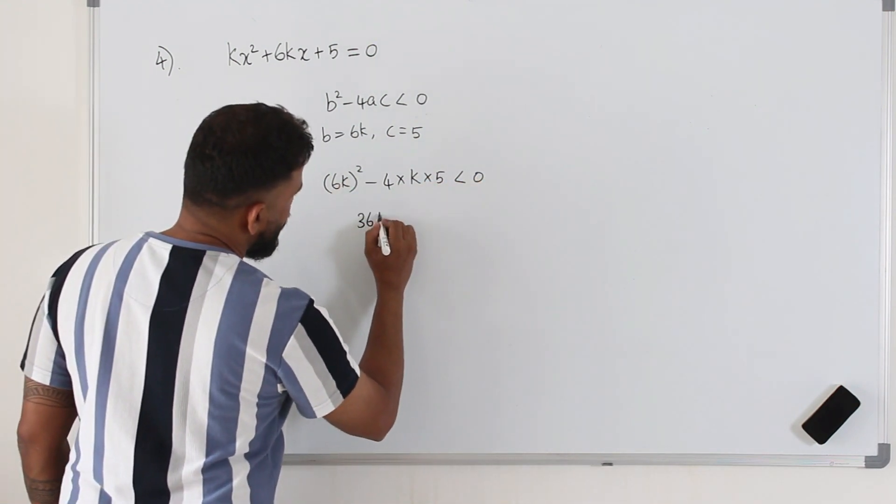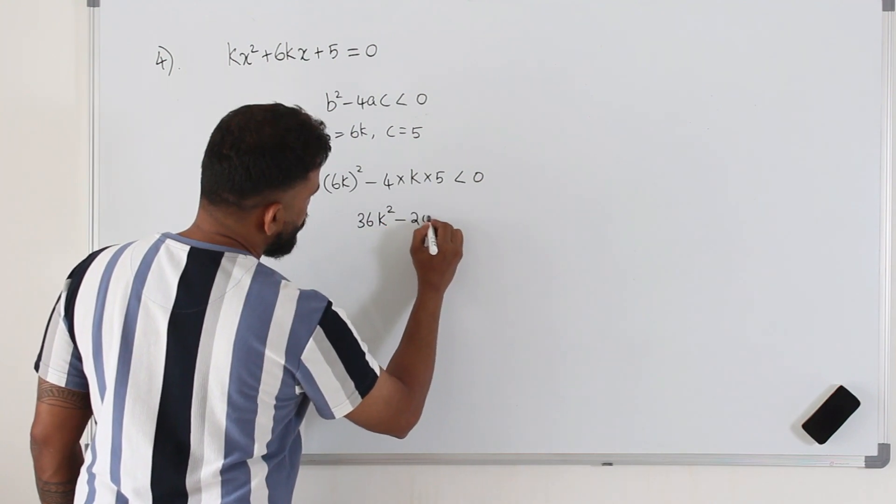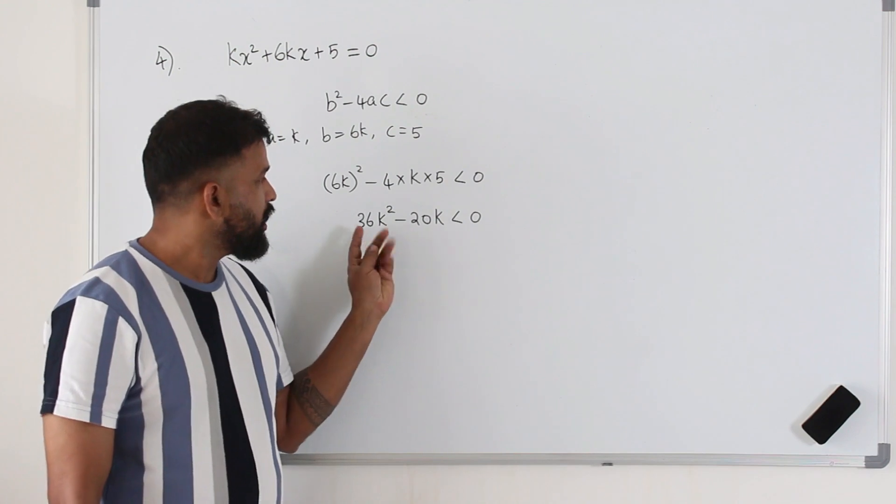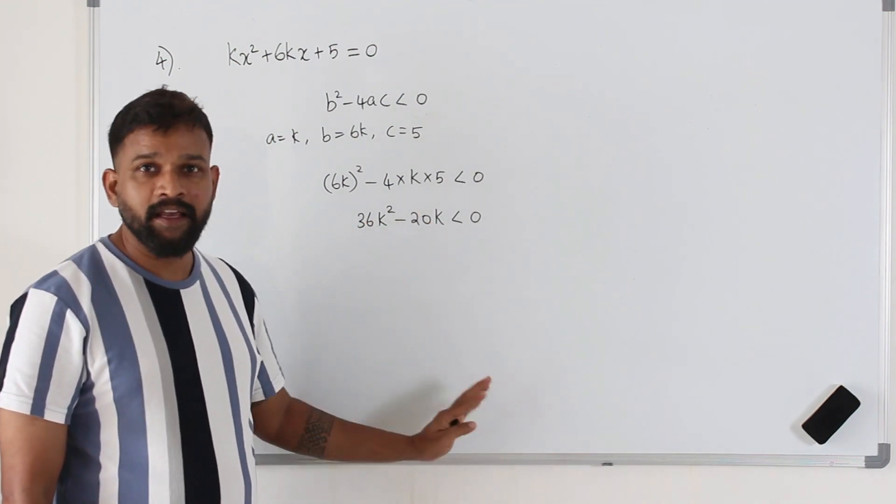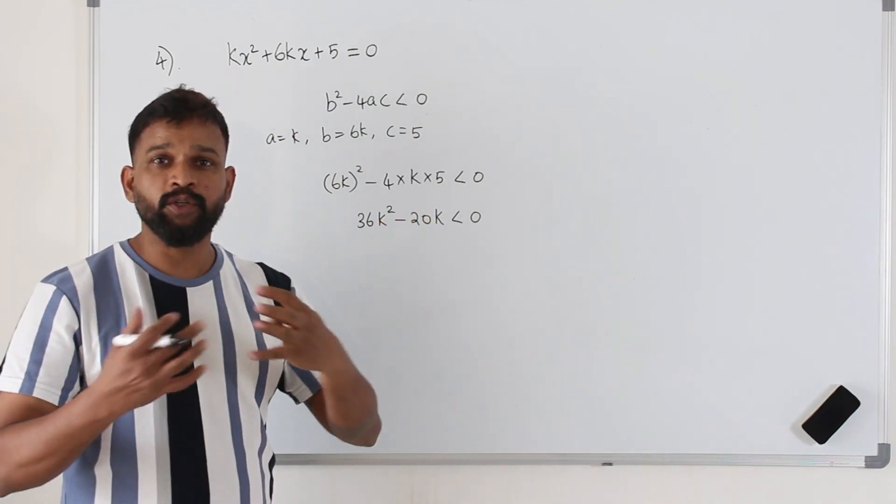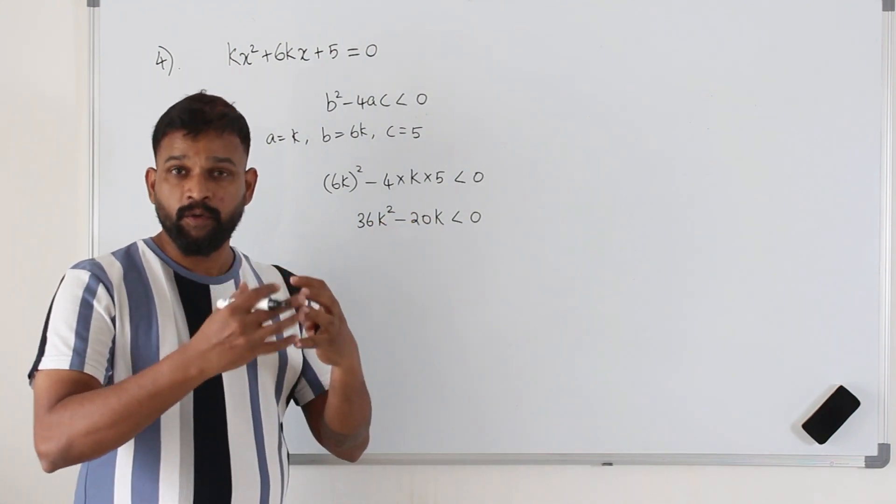You will get 36k square minus 20k is less than 0. Here, you cannot simply solve this and write the k values because it's not a quadratic equation. It's a quadratic inequality. You should know how to solve a quadratic inequality.